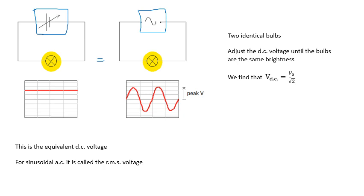If it's a sinusoidal AC, then what we find is that the equivalent DC voltage - in other words, the DC voltage which has the same power - is the peak voltage divided by root 2. So V_DC, the equivalent DC voltage, is the peak voltage divided by root 2, and we call it the RMS voltage.